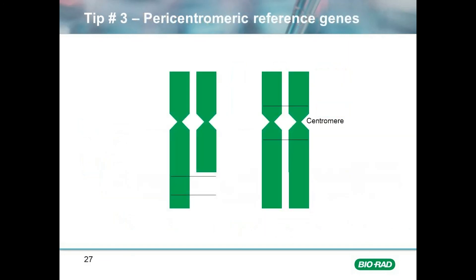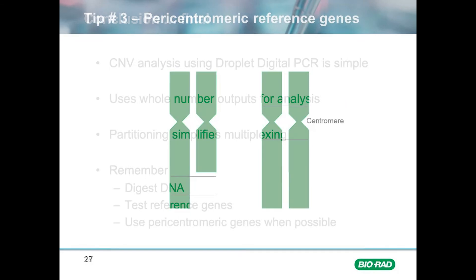The last tip for this session is to use pericentromeric reference genes when possible. Over the years we have found that reference genes on the extreme ends of chromosomes tend to be more unstable, and as such, we recommend selecting reference genes that are closer to the centromere.